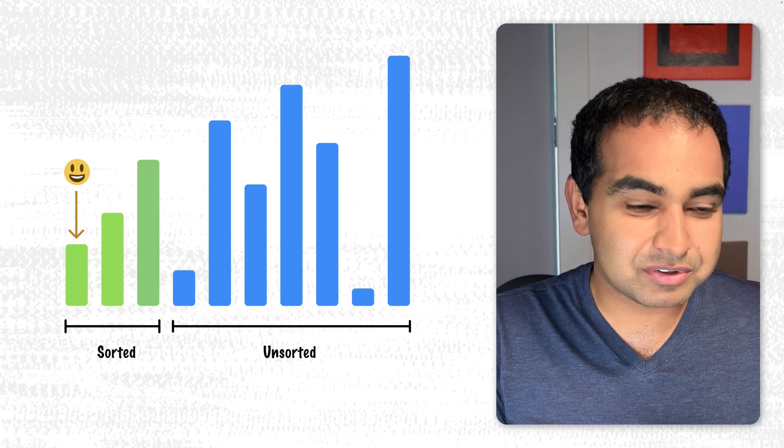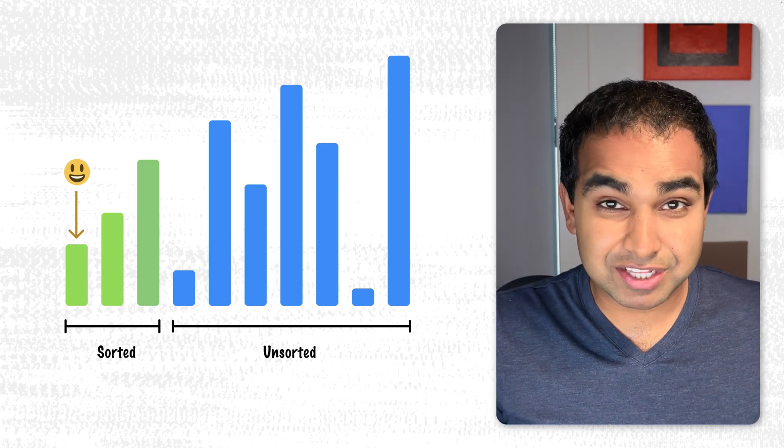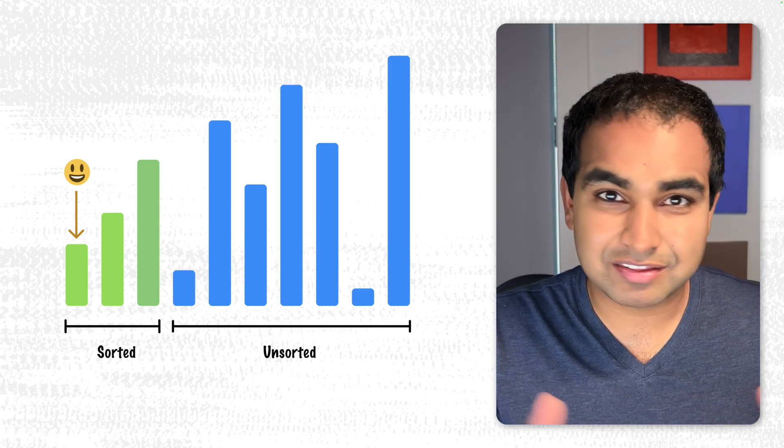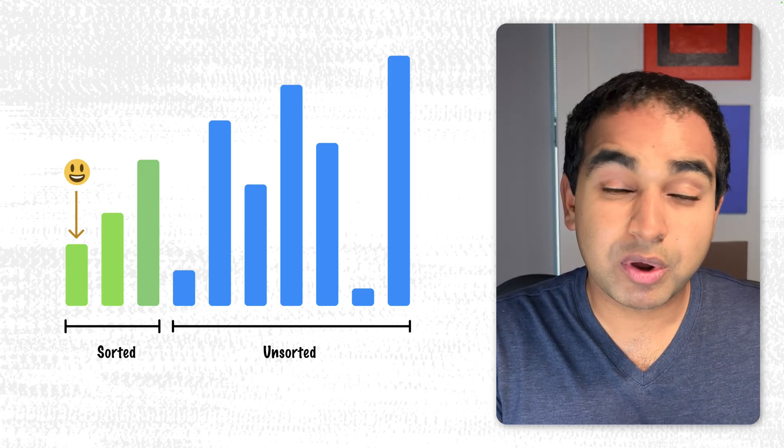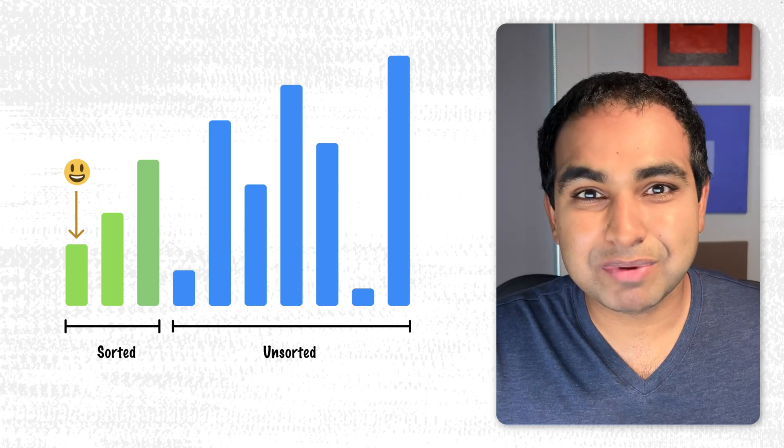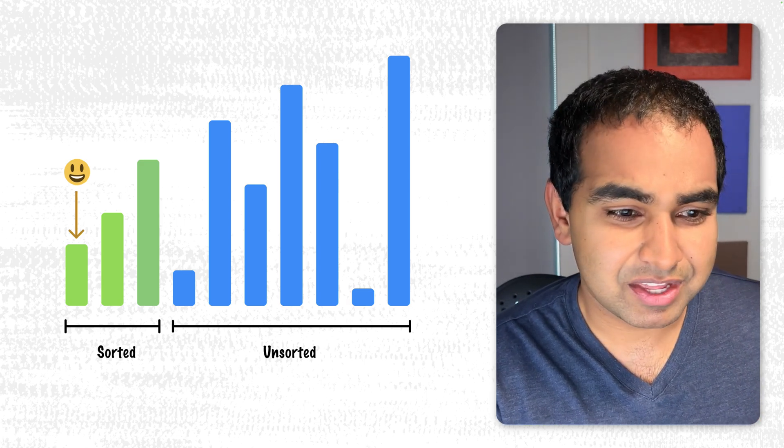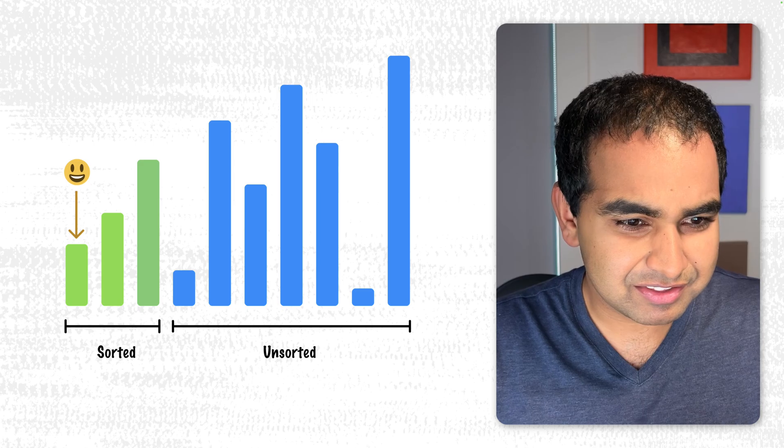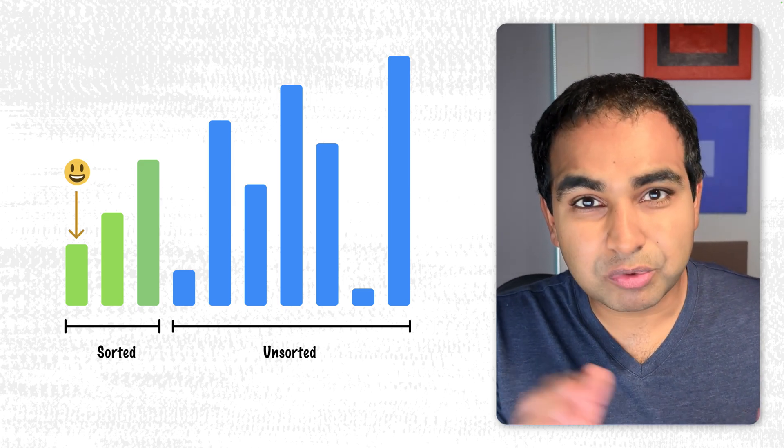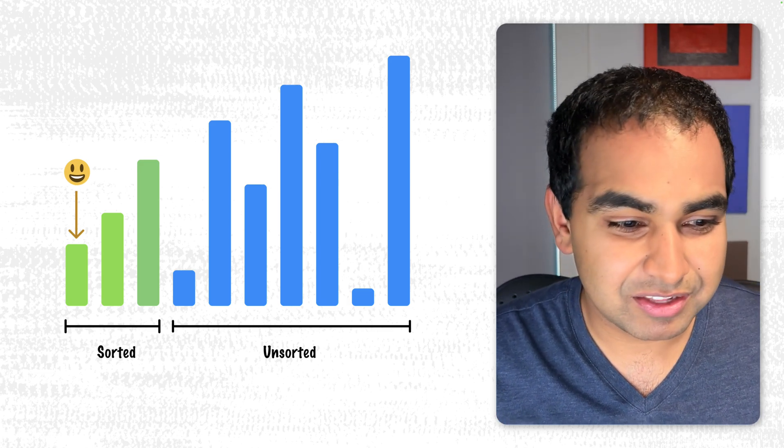Notice that as we are continuing to go through our insertion sort algorithm, the number of items we're dealing with in total does not change. The number of items we had at the very beginning is the same number of items we see right now. What is changing though is the balance between how many of the items are sorted and how many items are unsorted. You can see now we have three sorted items, and then we have seven unsorted items. You're going to keep seeing this number shift all the way until we have no more unsorted items and our entire collection is considered to be sorted.